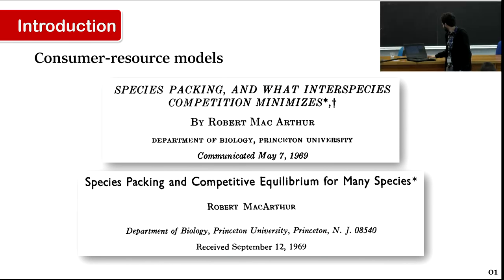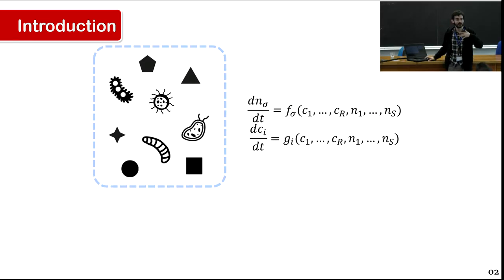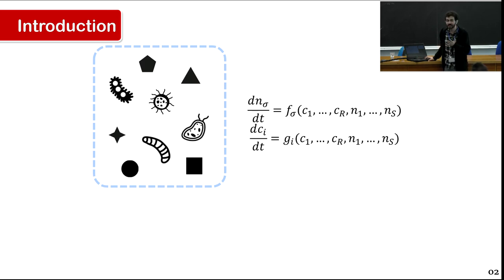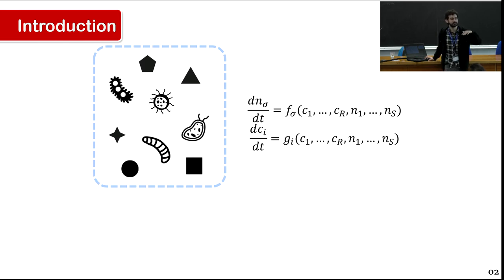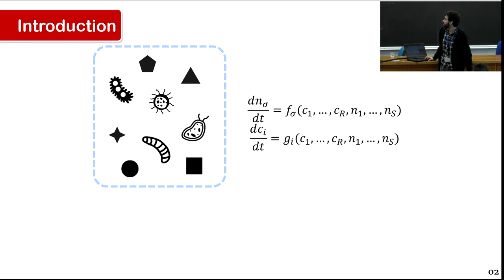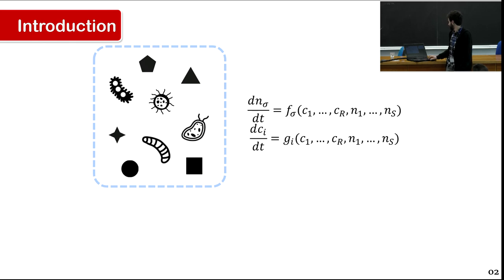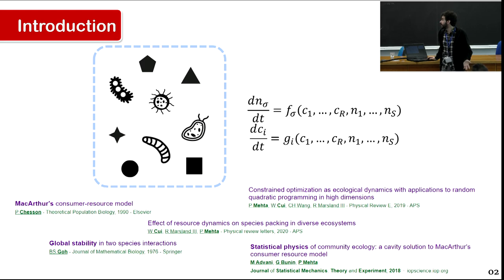We start simply with a community: we have our microbes, there are also some resources, and the abundances of these microbes are changing due to competition for resources. The concentration of resources is also changing because of depletion due to consumption.